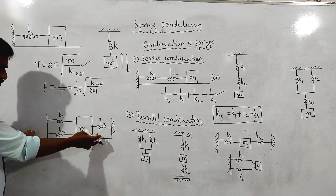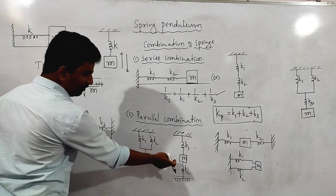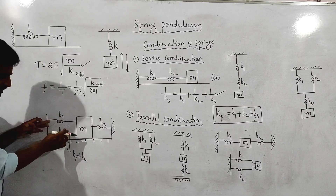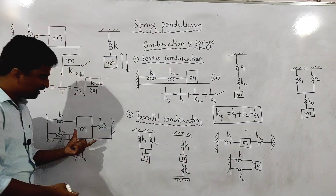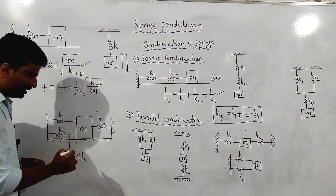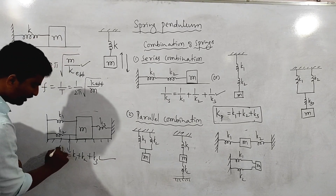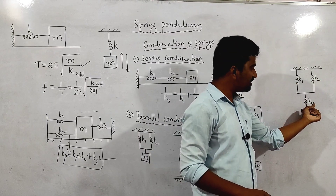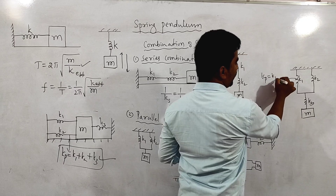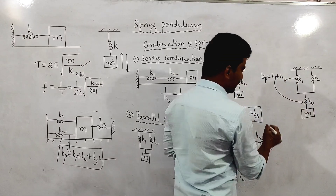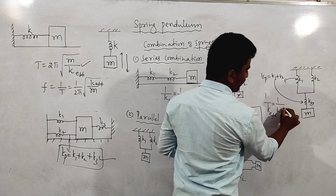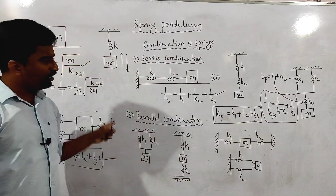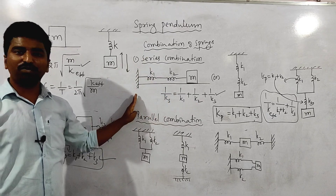This is the same configuration diagram — parallel combination gives k_eff = k1 + k2. If it is a series combination after parallel, the effective spring constant formula uses 1/k_eff = 1/(k1+k2) + 1/k3. These are the key topics from the oscillation chapter.